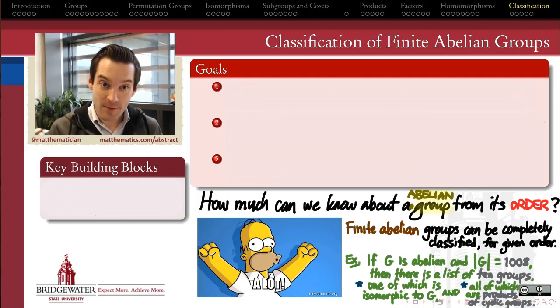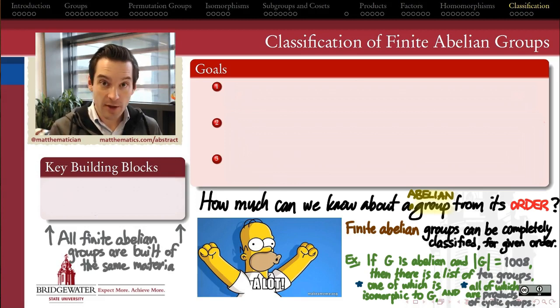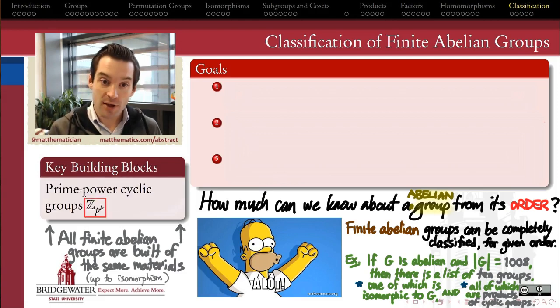And that's the fundamental theorem of finite abelian groups. It says every finite abelian group is isomorphic to a direct product of cyclic groups. And the theorem actually gives us a nice constructive way to list out what all those possibilities are. The building blocks, those cyclic groups that make up every finite abelian group up to isomorphism, are the cyclic groups whose order is a prime power.